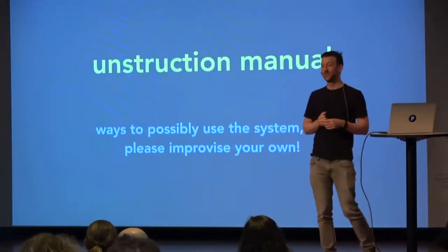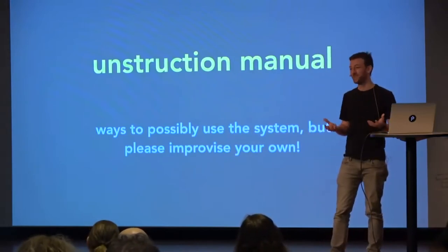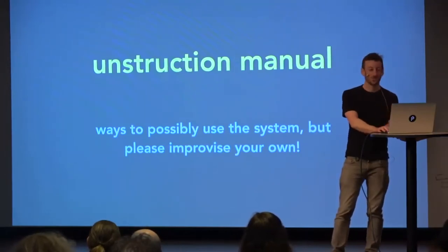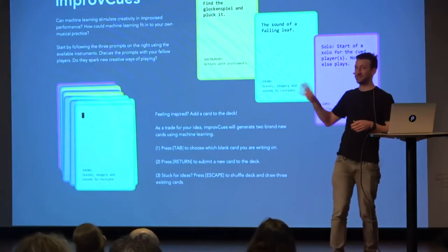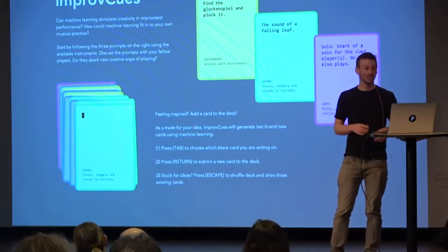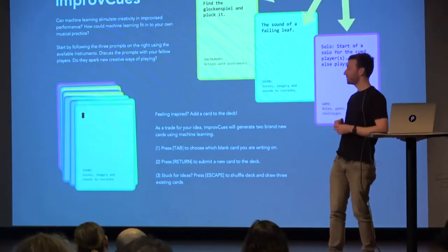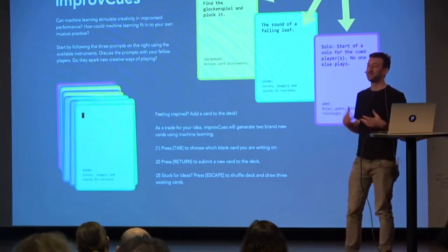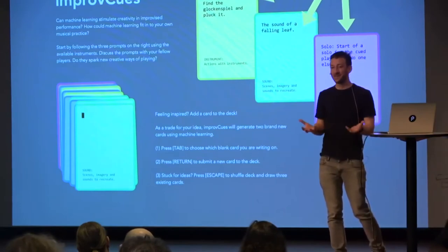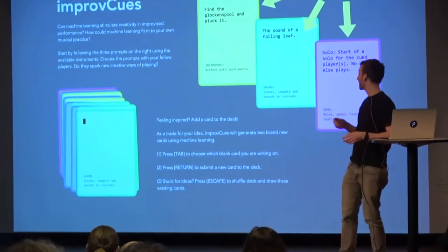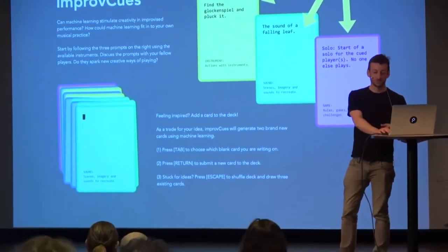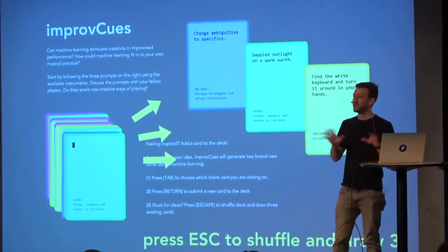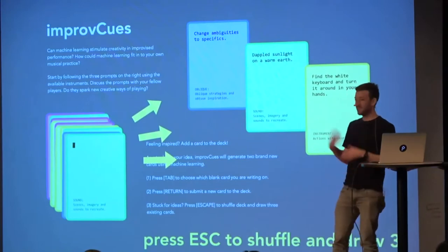I thought I'd give a quick unstructured manual — I don't want to tell you how to use this. The whole point is it's improvised. But I'll give you a quick heads up. So in a typical process: this is what it looks like projected up on the wall. There's a keyboard so you can type new cues. You start with some cards up, play those cards, be inspired, or just play music. The whole point is it's for unblocking — if you just want to create an improvised piece, just go for it. If you get bored, you've got a whole deck of cards. You can press escape, shuffle them, and draw three new cards. At this point, there's no machine learning — just the cards that are already there.